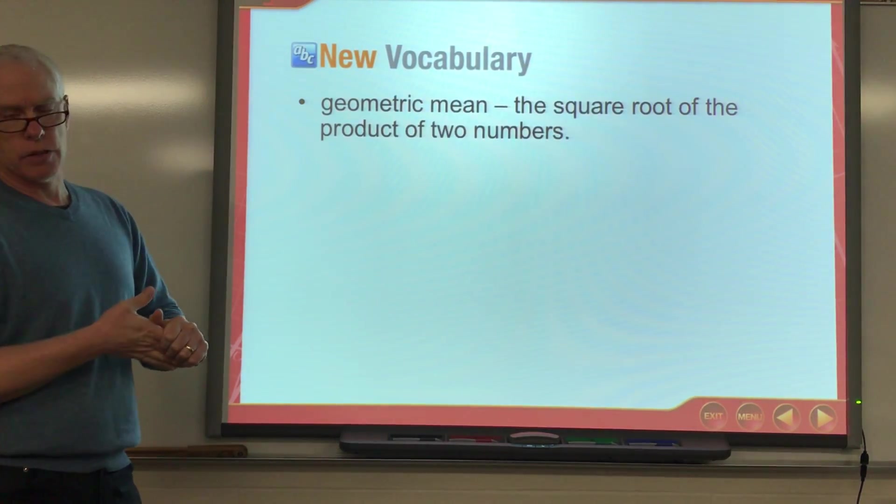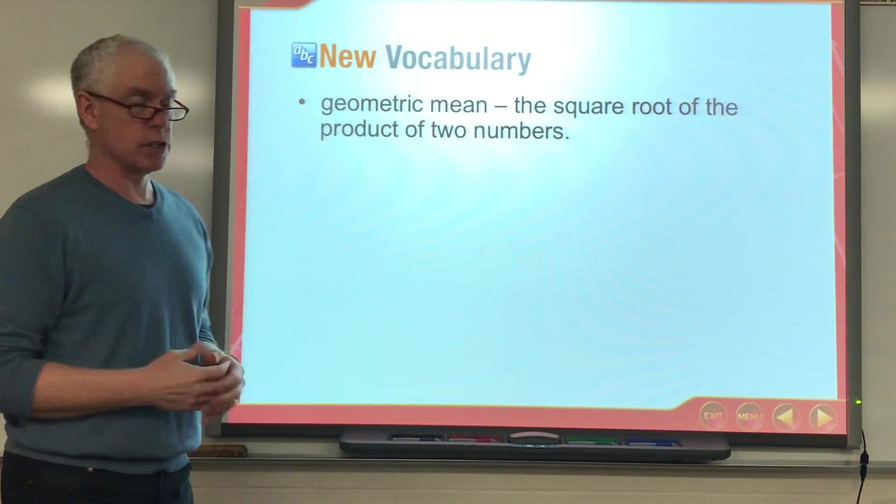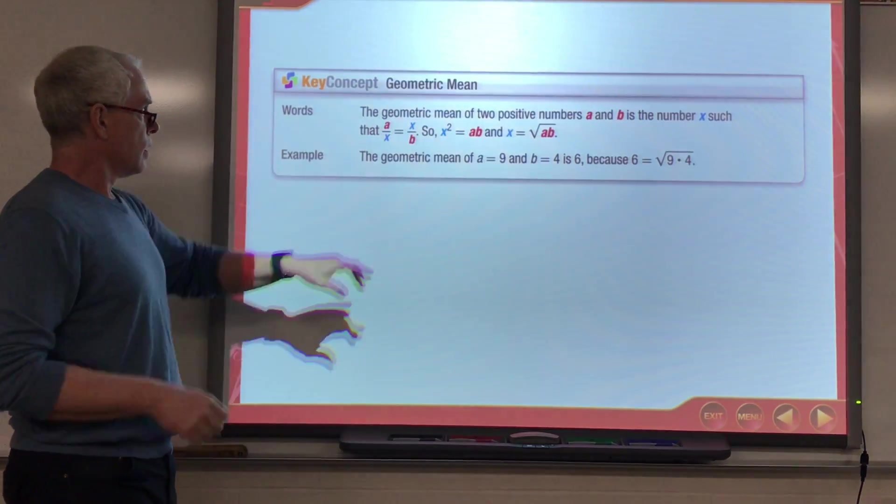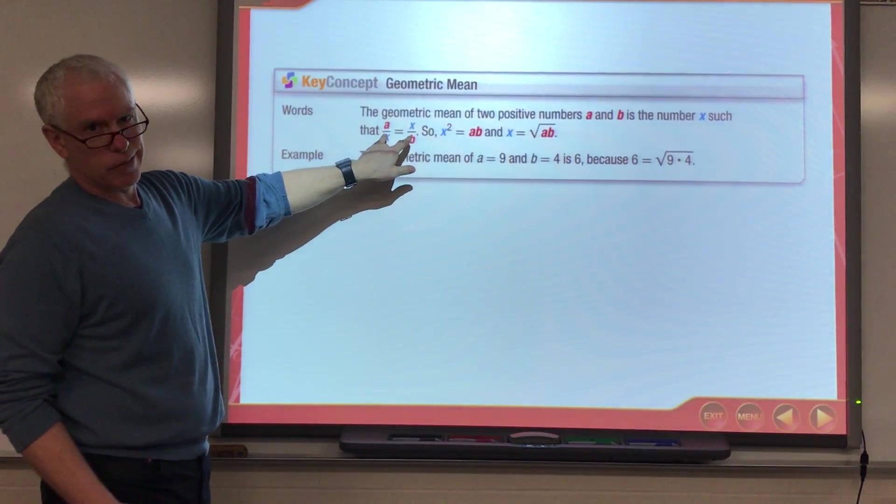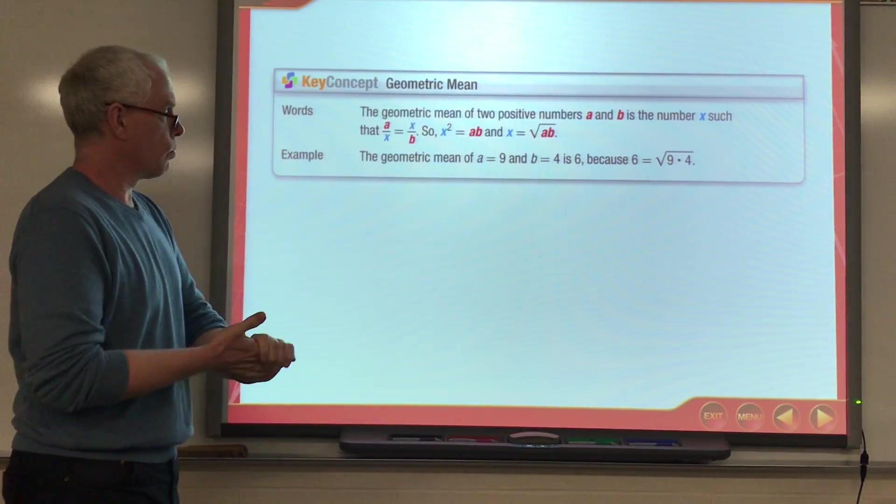So what is a geometric mean? The square root of the product of two numbers. So if you get two numbers, you multiply them, you take the square root, you've got the geometric mean. This is the proportion that allows us to find the geometric mean. But if you solve that proportion, you get just what I said, the square root of the product.